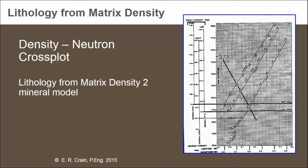It doesn't necessarily mean that a data point falling on one of these lines is equal to the mineral name on the line, but it does mean that the matrix density — that's the grain density of the rock — is equal to the grain density of that mineral. So if a data point falls on the limestone line, it might be limestone, but it might also be a mixture of quartz and something else whose matrix density is equal to that of limestone, namely 2.71 grams per cc.